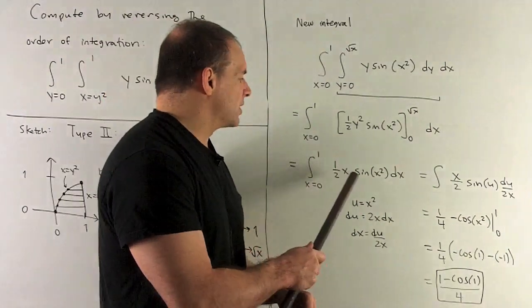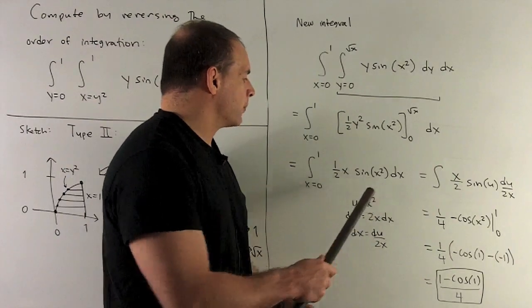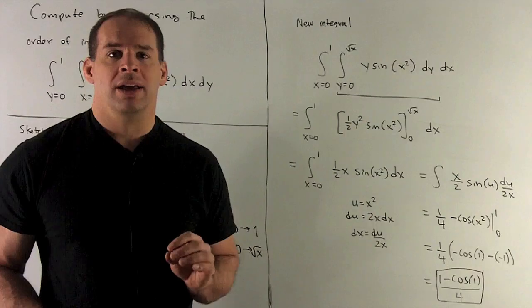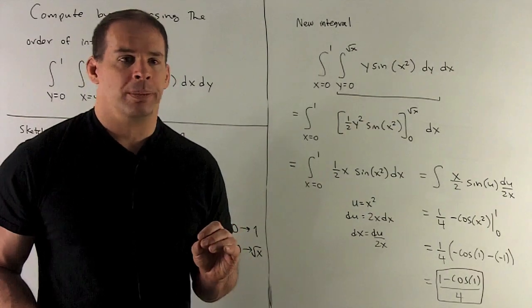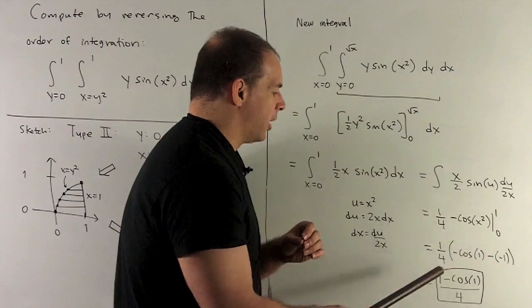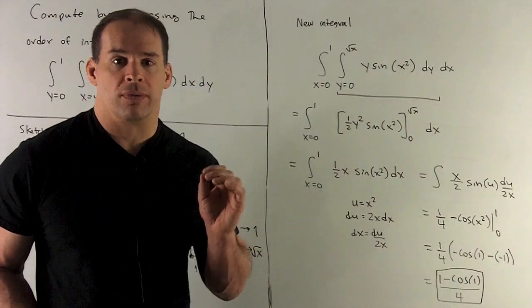I get one-half x sin(x squared), and I want to take the antiderivative of this. This is just a u-substitution: let u equal x squared, and then I can follow my nose. When you crunch things down, you finally wind up with (1 minus cosine 1) over 4.